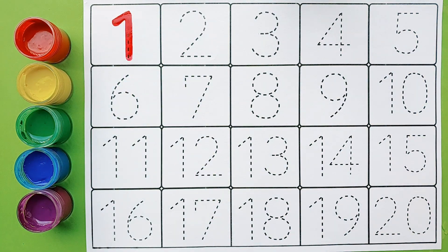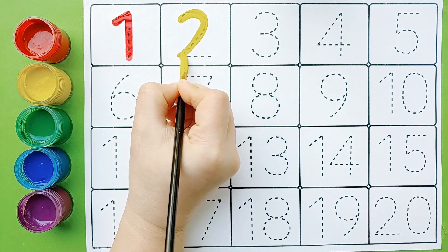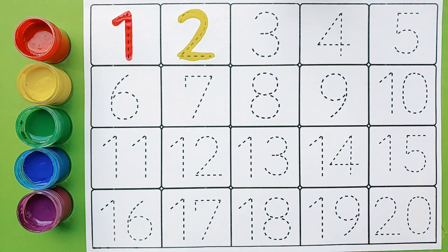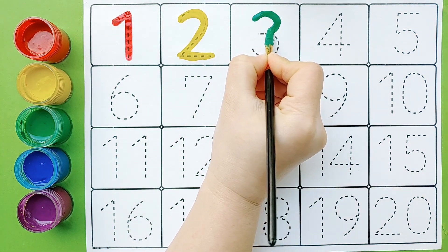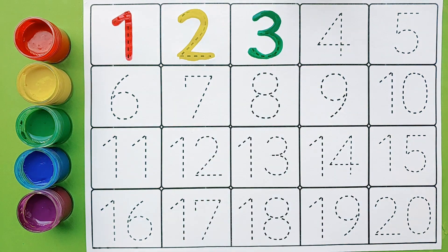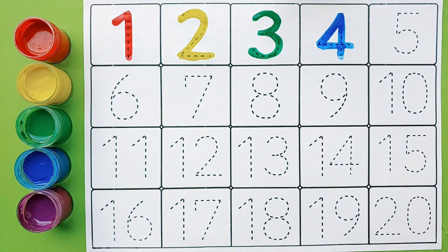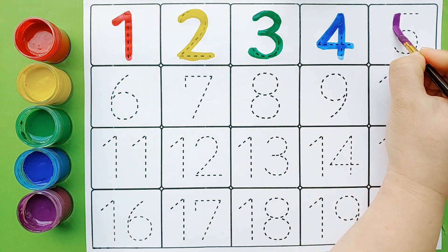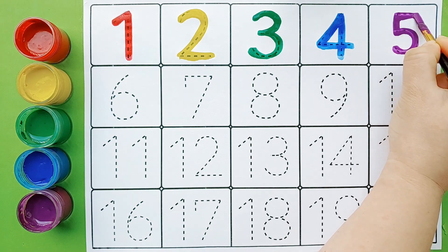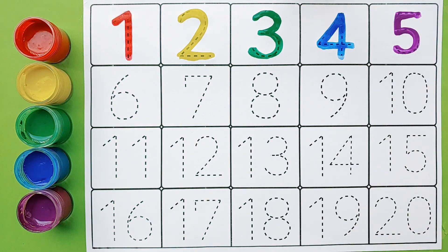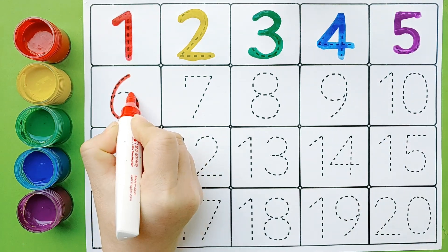One. A, B, C, D, E, F, G. Two. H, I, J, K, L, M, N, O, P. Q, R, S, T, U, V, W, X, Y, and Z. Now I know my ABCs. Next time won't you sing with me. Six.